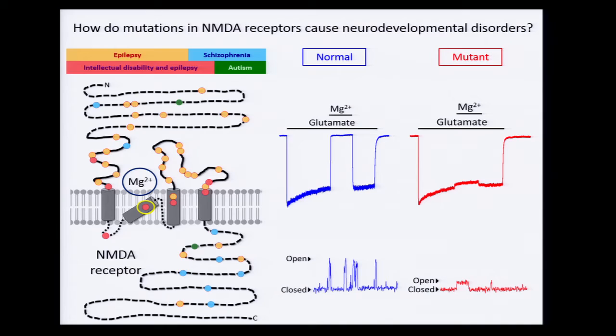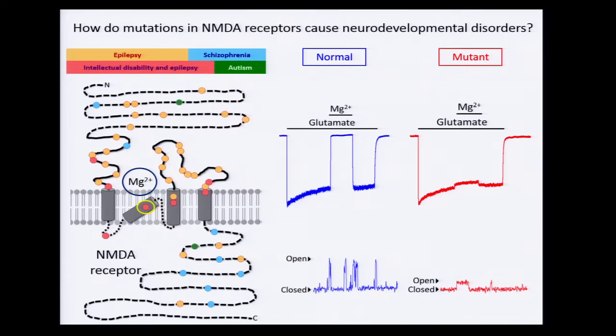And of course, losing magnesium block will impact on memory. The bottom right of the slide shows individual receptors opening and closing. You can see that much less current is flowing in the mutant receptor — less signal is getting through.